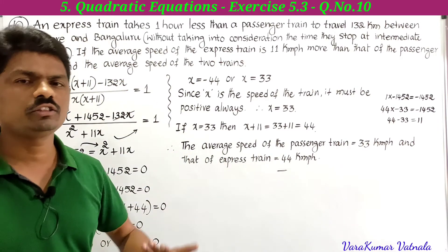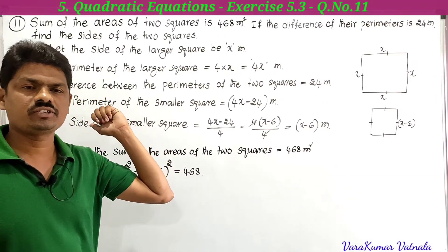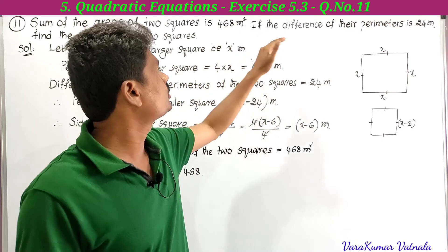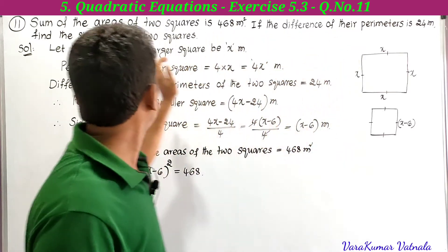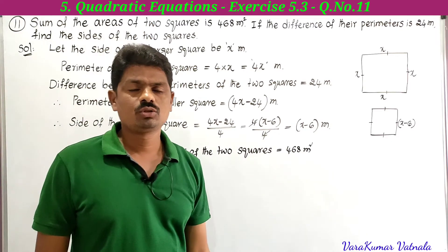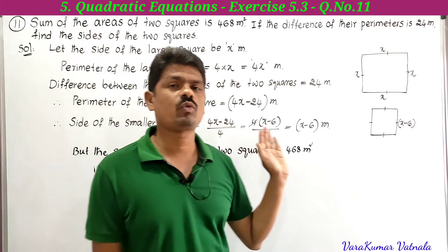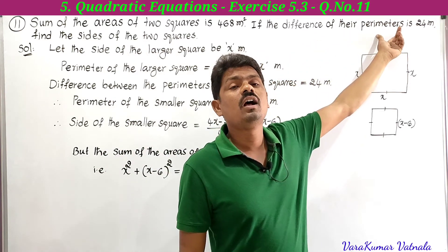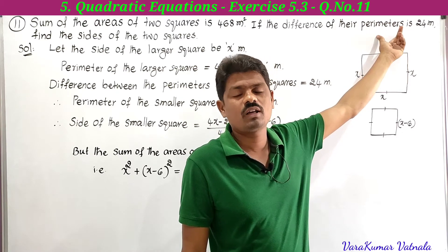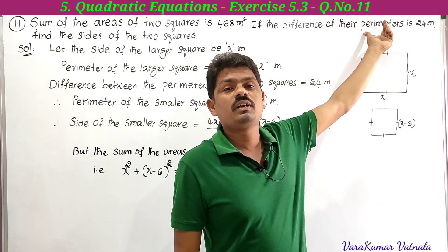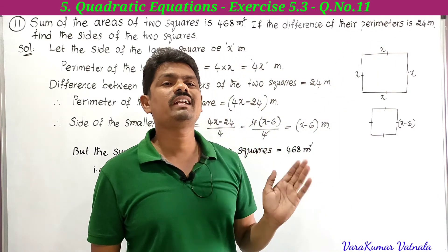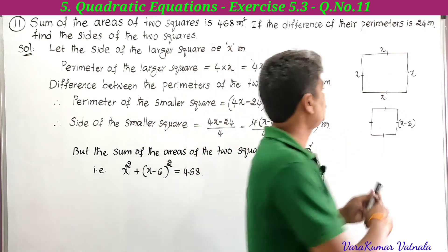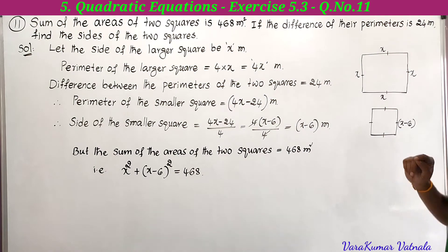This was the 10th problem in Exercise 5.3. Now we solve the 11th problem. The problem states: the sum of the areas of two squares is 468 square meters. If the difference of their perimeters is 24 meters, find the sides of the two squares. From the difference in perimeters we can understand that one square is larger and the other is smaller.